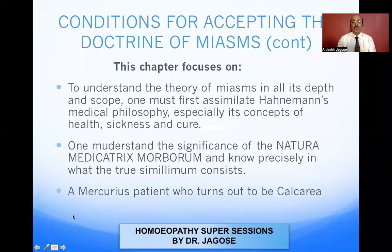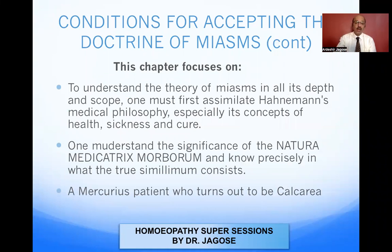This chapter focuses on the following: to understand the theory of miasms in its depth and scope, one must first assimilate Hahnemann's medical philosophy, especially the concept of health, sickness, and cure. If you want to understand the theory of miasms completely and in depth, you must first understand these concepts. One must also understand the significance of Natura Medicatrix Morborum, the true meaning of the similimum, and the mercurius patient who turns out to be calcarea.